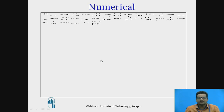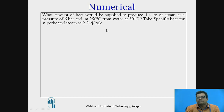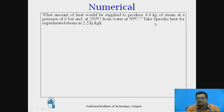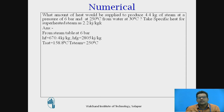Numerical 1: What amount of heat would be supplied to produce 4.4 kg of steam at a pressure of 6 bar and 250 degrees Celsius, from water initially at 30 degrees Celsius? The specific heat for superheated steam is given as 2.2 kJ/kg·K. From the steam table at 6 bar: Hf = 670.4 kJ, Hfg = 2805 kJ/kg, saturation temperature = 158.8°C, and the steam temperature is 250°C.